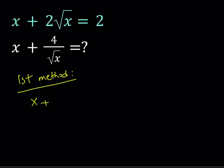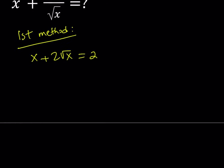So we have x plus 2 root x equals 2. This is a radical equation. I could isolate the radical, square both sides, so on and so forth, but I'm going to be using a different approach. Let's use substitution. You know that's one of my favorite methods.